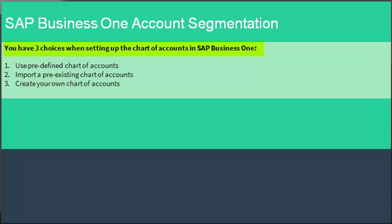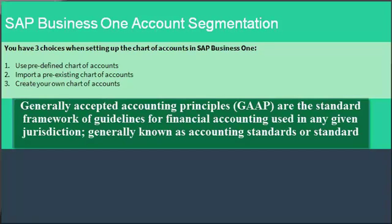You have three choices when setting up the Chart of Accounts in SAP Business One: you can use a pre-defined Chart of Accounts, import a pre-existing Chart of Accounts, or create one entirely on your own. There are mandatory settings in the SAP Business One Chart of Accounts. The organization follows GAAP — Generally Accepted Accounting Practices — which includes separate drawers for accounts representing assets, liabilities, equity, revenues, cost of sales, expenses, financing, and other revenues and expenses.